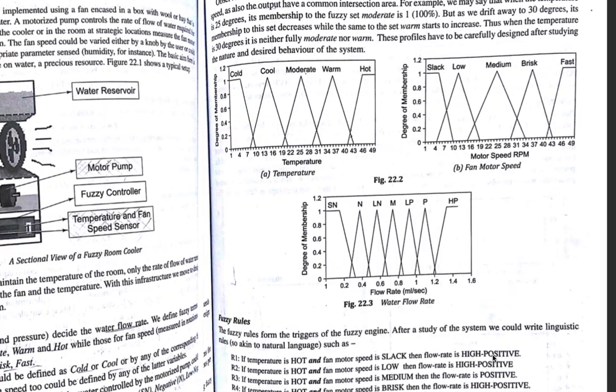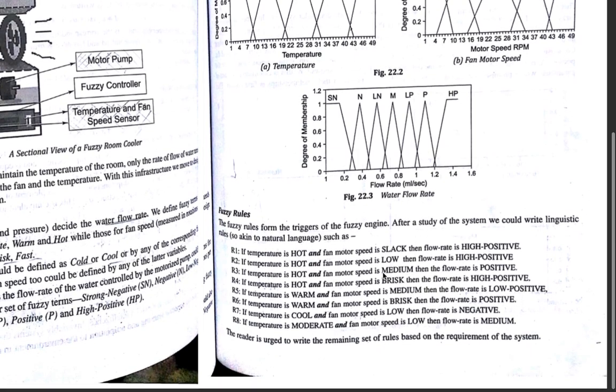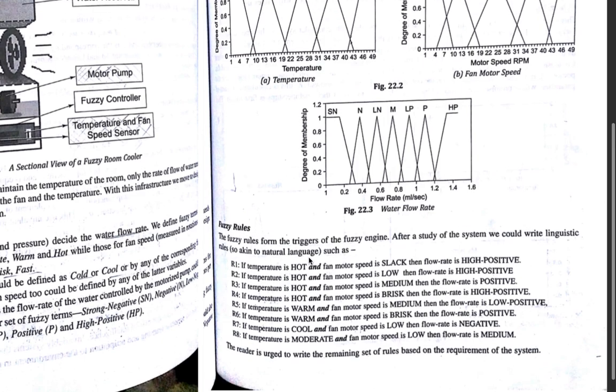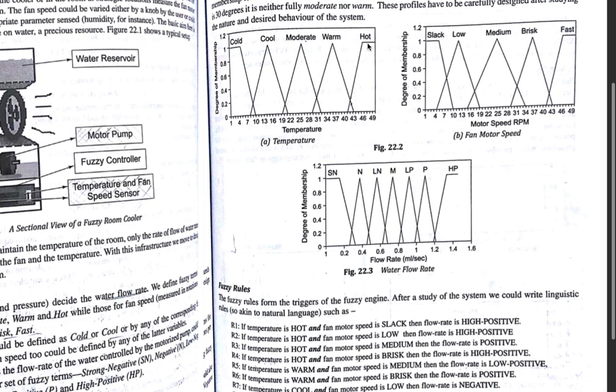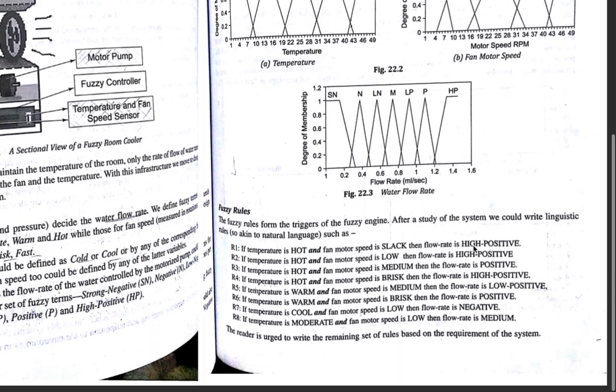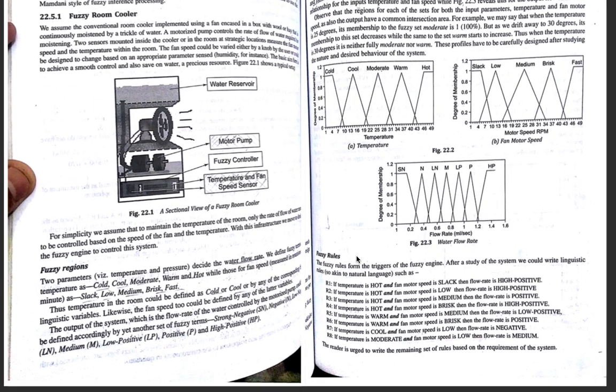Now, according to how you want to design the system, you assign fuzzy rules to it. If temperature is hot and the motor fan speed is slack, then your flow rate is high positive. This is what you assign by yourself, according to your system requirement. Now, let's see the next page.